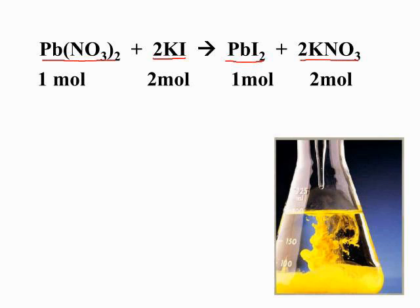Your two reactants — potassium iodide in the flask and lead 2 nitrate in the dropper — interact, and at the interface of where they interact you produce two products. This yellow precipitate is the lead 2 iodide, and the potassium nitrate is floating around in the flask. You will not always react one entire mole of lead 2 nitrate and two moles of potassium iodide, but these mole ratios will remain constant.